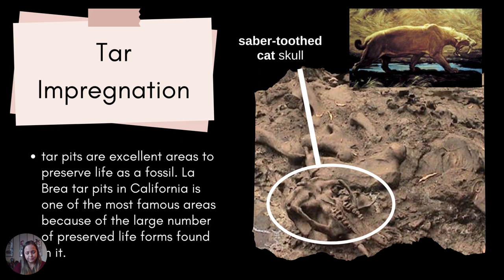Animals would either get stuck — most of the time they did get stuck in the tar and wouldn't be able to leave. They would either starve to death or be scavenged by larger creatures. For example, if a mammoth got stuck in the tar, a saber might come over and just eat it for dinner.